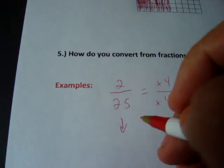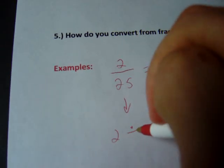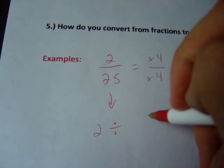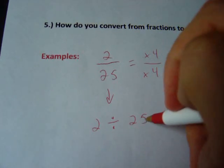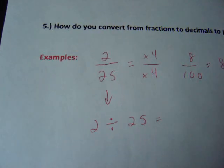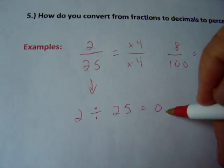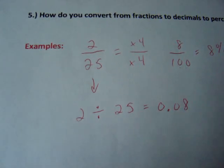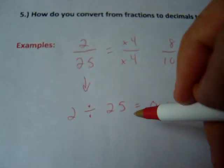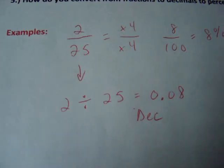You start with the numerator. For example, in this case, 2. Then you press divide on your calculator, for instance, and then the denominator, 25. In this case, you'll find out that 2 divided by 25 gives you 0.08. Now, that's the decimal form. So what do you do with that if you want a percent?